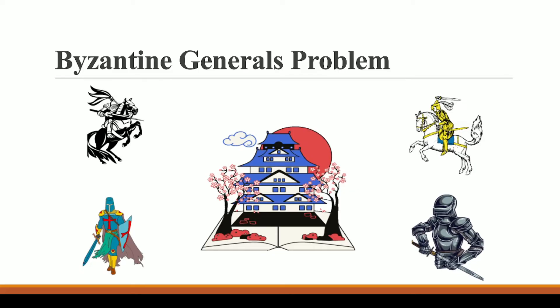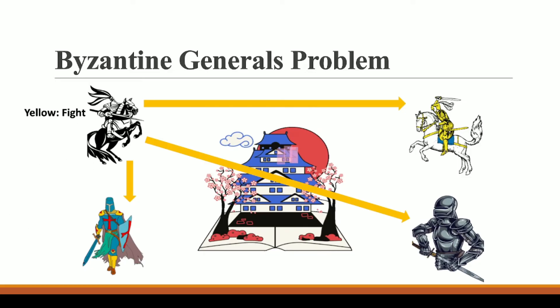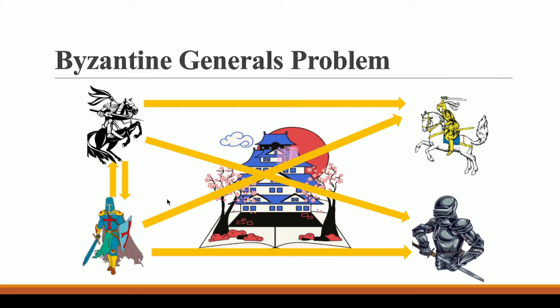So they will send their messengers, indicating whether to attack or not to attack at a given point in time. One army general sends information to the rest saying this is the best time to attack on Byzantine.